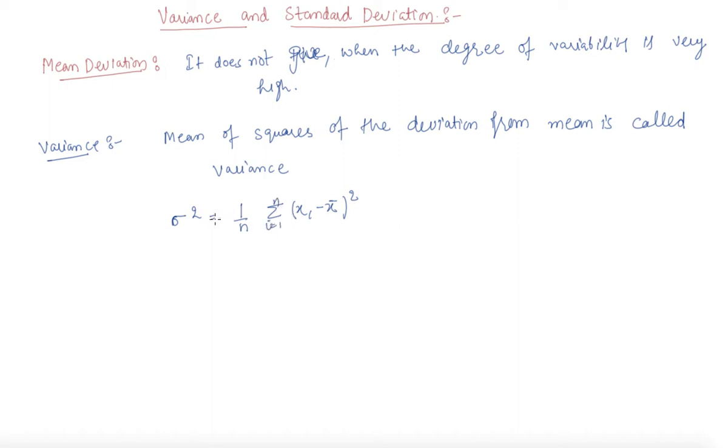This is the formula for variance and the formula for standard deviation. So what is standard deviation? In the calculation of variance, we find the unit of individual observation xi and the unit of variance are different.